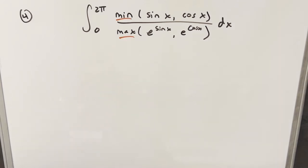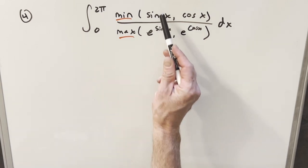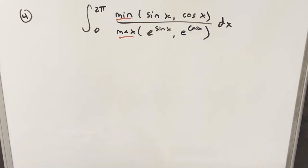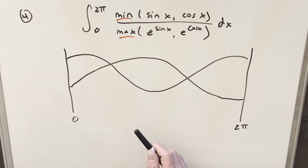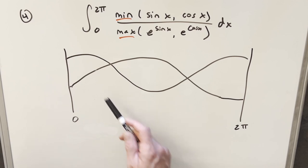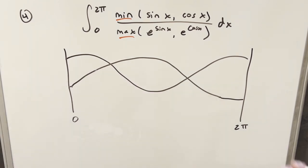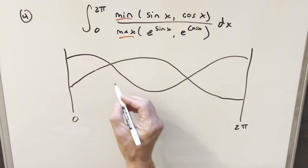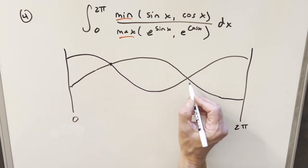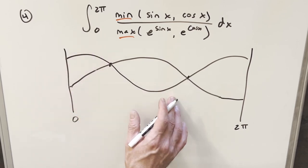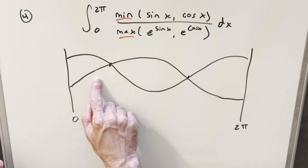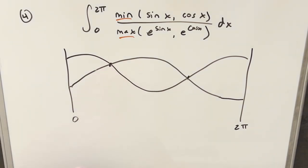To get started, we really need to get a feeling for this min and max function and what we have inside here. The nice thing is we have this similarity — sine appears in both numerator and denominator, and so does cosine. Let's take a look at a rough graph. We're just trying to break this up into sections where we have a min and a max; we don't need precise values.